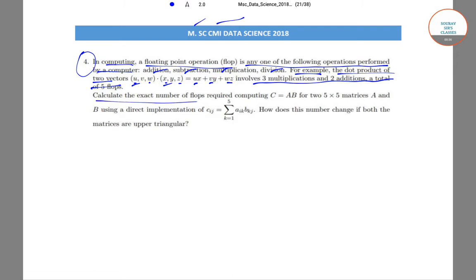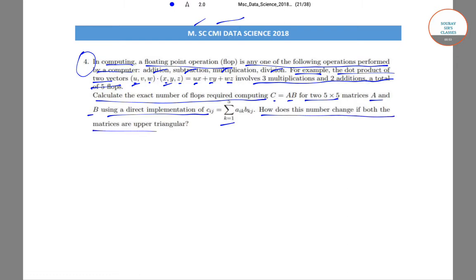Now we calculate the exact number of flops required for computing C = A·B for two 5×5 matrices A and B, using a direct implementation of the formula C(i,j) = Σ A(i,k)·B(k,j) where k goes from one to five. We also need to find how this number changes if both matrices are upper triangular.